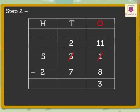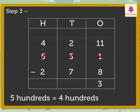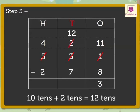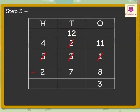Therefore, 11 minus 8 is equal to 3 ones. Write 3 in the ones column. Step three: subtract the digits in the tens column, that is 2 and 7. As 2 is smaller than 7, we regroup 5 hundreds as 4 hundreds plus 10 tens. So we have 10 plus 2 is equal to 12 tens. Therefore, 12 minus 7 is equal to 5 tens. Write 5 in the tens column.